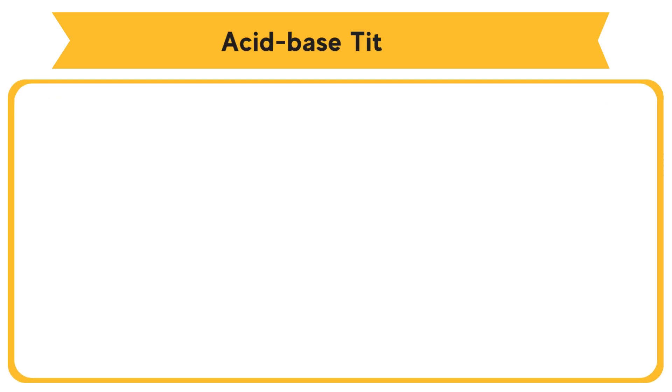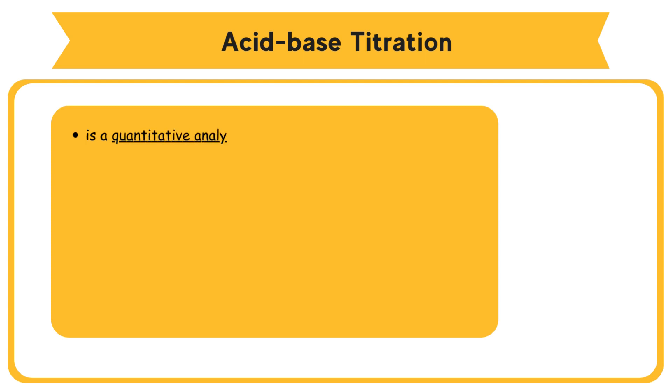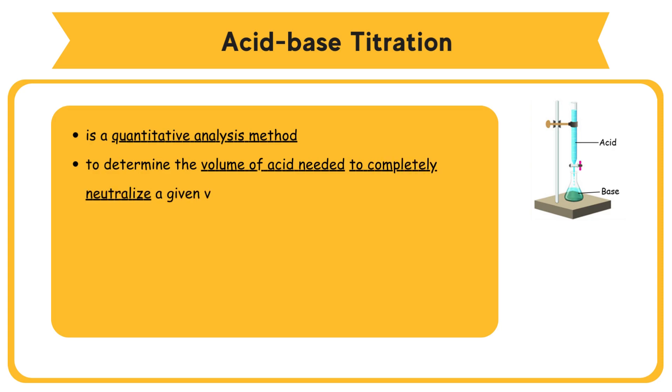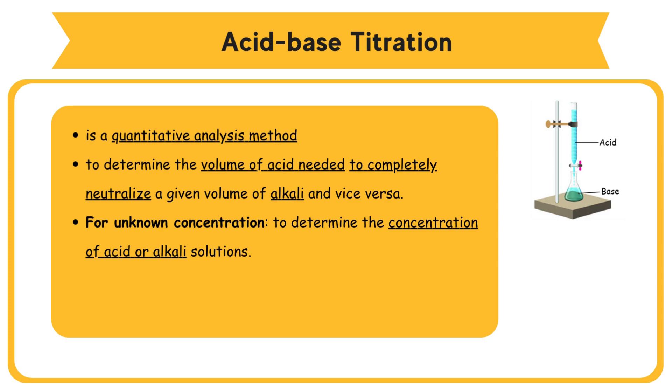Acid-base titration: Titration method is a quantitative analysis method to determine the volume of acid needed to completely neutralize a given volume of alkali and vice versa. Titration is used to determine the concentration of acid or alkali solutions of unknown concentrations.